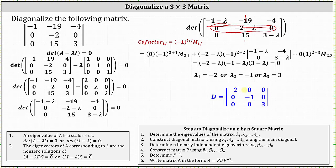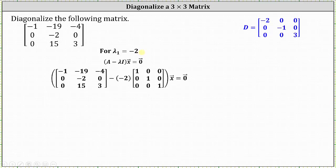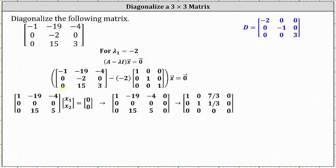Now we need to find the corresponding eigenvectors that will form the columns of matrix P. Starting with lambda sub one equals negative two, we solve the equation A minus lambda times I times vector x equals the zero vector. Substituting negative two for lambda, the coefficient matrix has entries: one, negative 19, negative four in row one; zero, zero, zero in row two; zero, 15, five in row three. Writing the augmented matrix and reducing to echelon form, there is no pivot in column three, so x3 is a free variable.